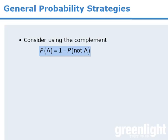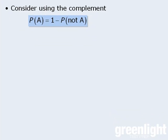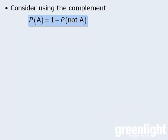One of the first things to consider is whether the question can be solved faster by using the complement. So rather than focus on the probability an event occurs, it may be faster to focus on the probability an event does not occur.